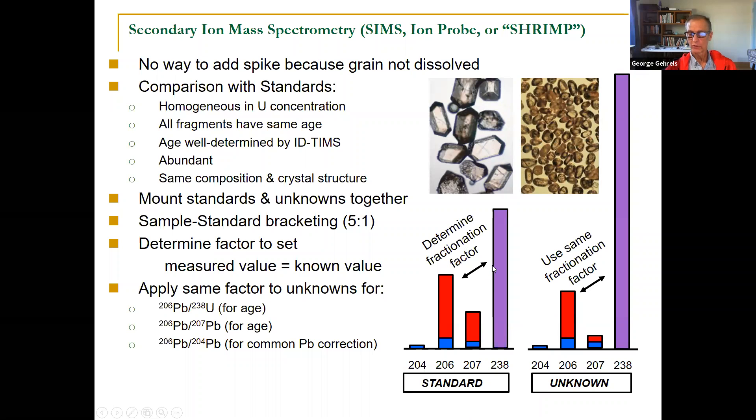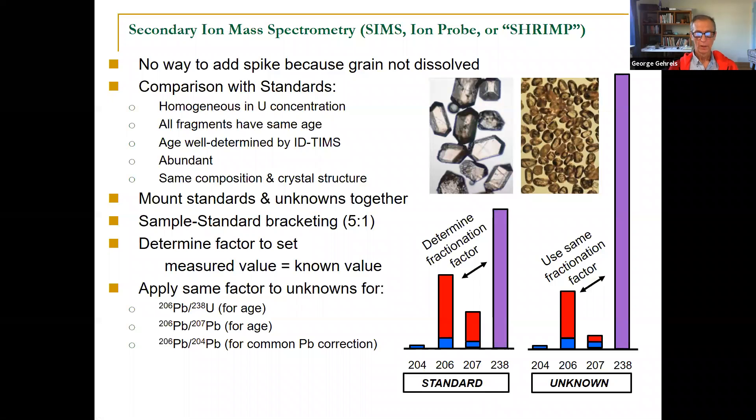So we know the 206-238 ratio of those crystals. You measure the 6-8 ratio on your mass spectrometer that day, actually during the analysis of your unknowns. And you determine the fractionation factor, 5%, 6%. You have to change the ratio that's measured by 6% to get to the true age. And then you assume that your unknown crystals are going to have that same fractionation. And you apply that same fractionation factor to correct for 6-8 that you measure for your unknowns. And then when you do that, you can calculate the age.